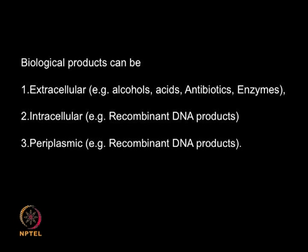Generally, biological products could be extracellular like alcohols, acids, antibiotics and some enzymes. It could be intracellular — sometimes you have recombinant DNA products. It could be periplasmic, meaning it could be in between. So you can have different types of products being produced, and depending upon where the product is getting accumulated, you may have to resort to breaking the cells and releasing the contents.